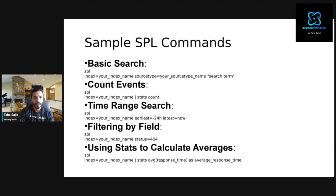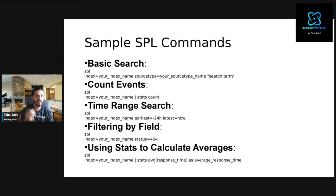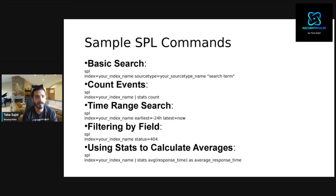Some basic SPL commands help you query data from the search head. When you query, the search head goes into the indexer buckets to find keyword key-value pairs and returns the data, which you can then visualize in multiple ways.